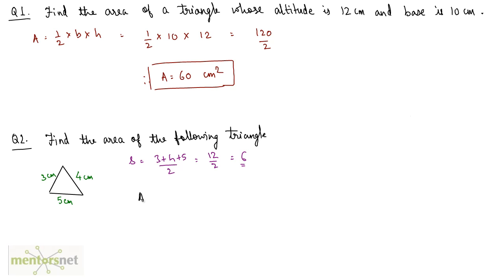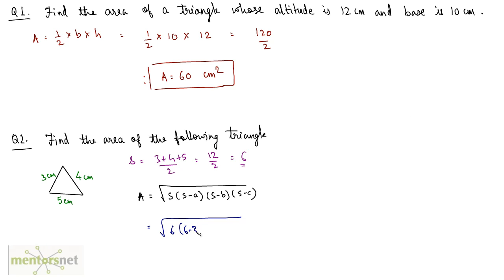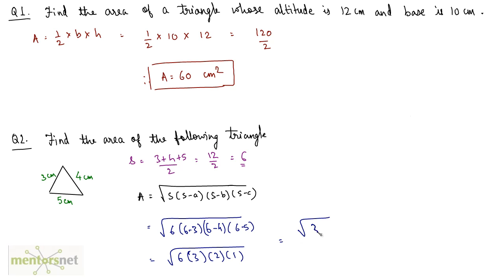The value of S is 6. Area is equal to the square root of 6 into (6 minus 3) into (6 minus 4) into (6 minus 5), which is the square root of 6 into 3 into 2 into 1, and that is equal to the square root of 36. The square root of 36 is 6 centimeters squared. So 6 centimeters squared is the area of this triangle.